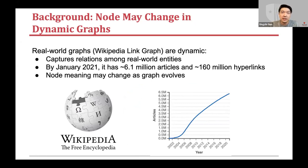In the Wikipedia link knowledge graph, each node is a Wikipedia article usually describing real world entities, and each edge is the hyperlink connecting two articles, kind of like citations in a paper. This graph is large scale — it has millions of nodes and hundreds of millions of edges, and it keeps scaling up, as you can see in this figure. Certainly, some entities may change meaning, and this is captured by the dynamic knowledge graph.